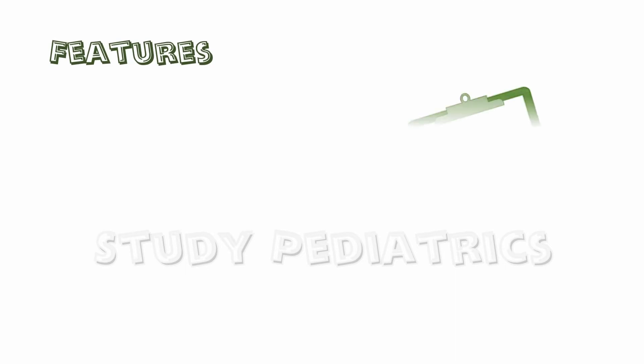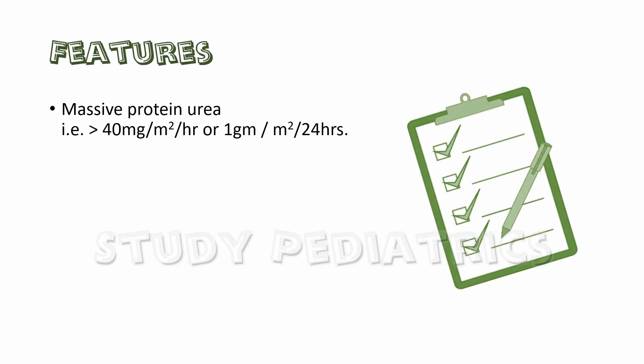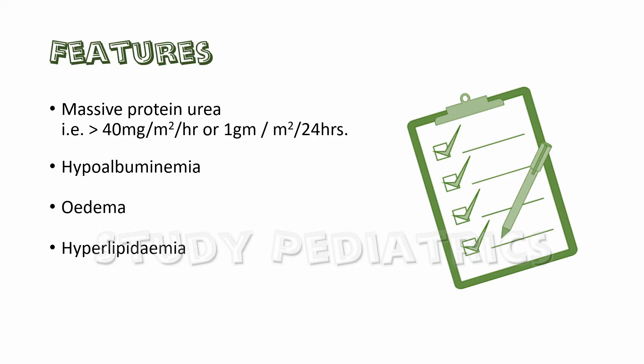Let's summarize the features. First, massive proteinuria — more than 1 gram per meter square per day in children and more than 3.5 gram per day in adults — causes hypoalbuminemia, resulting in edema. This leads to overproduction of lipoproteins causing hyperlipidemia, and since anticoagulatory factors are excreted, there occurs hypercoagulability of blood.